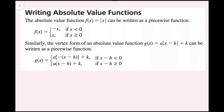Writing absolute value functions: the absolute value function f(x) equals |x| can be written as a piecewise function — f(x) equals negative x if x is less than 0, and x if x is greater than or equal to 0. Similarly, the vertex form g(x) equals a times |x minus h| plus k can be written as a piecewise function using a(-(x-h)) + k when x minus h is less than 0, and a(x-h) + k when x minus h is greater than or equal to 0.